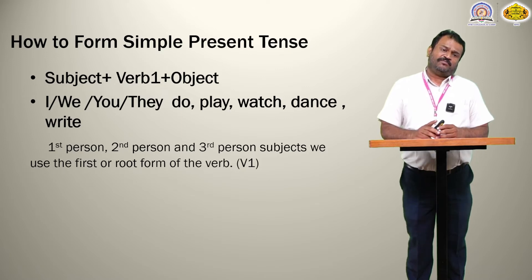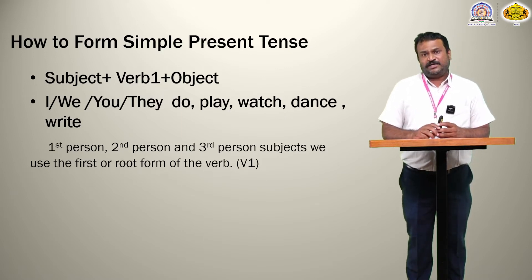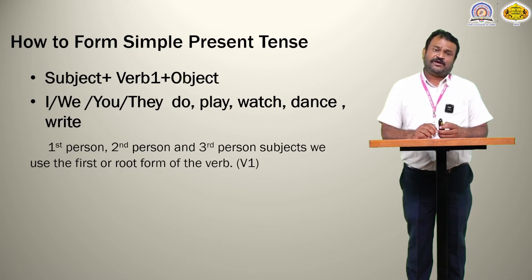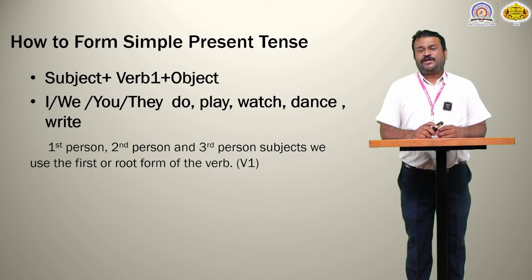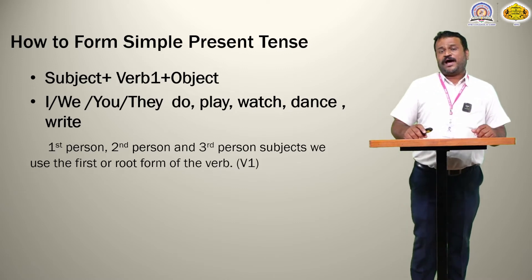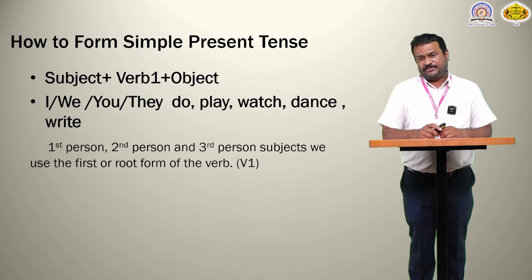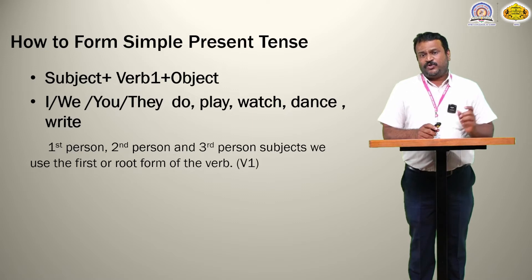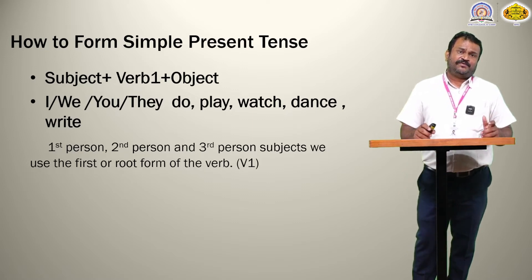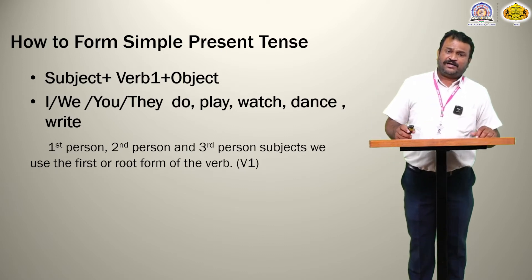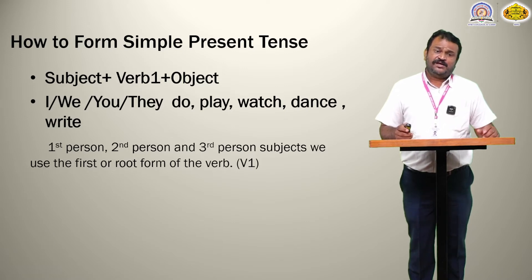How is simple present tense formed? There is a simple formula: subject plus verb plus object. We use the first form, or root form, of the verb. For first person, second person, and third person subjects, we use the root form. For example: I play, I do, we watch, we dance. Verbs like do, play, watch, dance, write, see, run, exercise — all these verbs are in the first or root form.